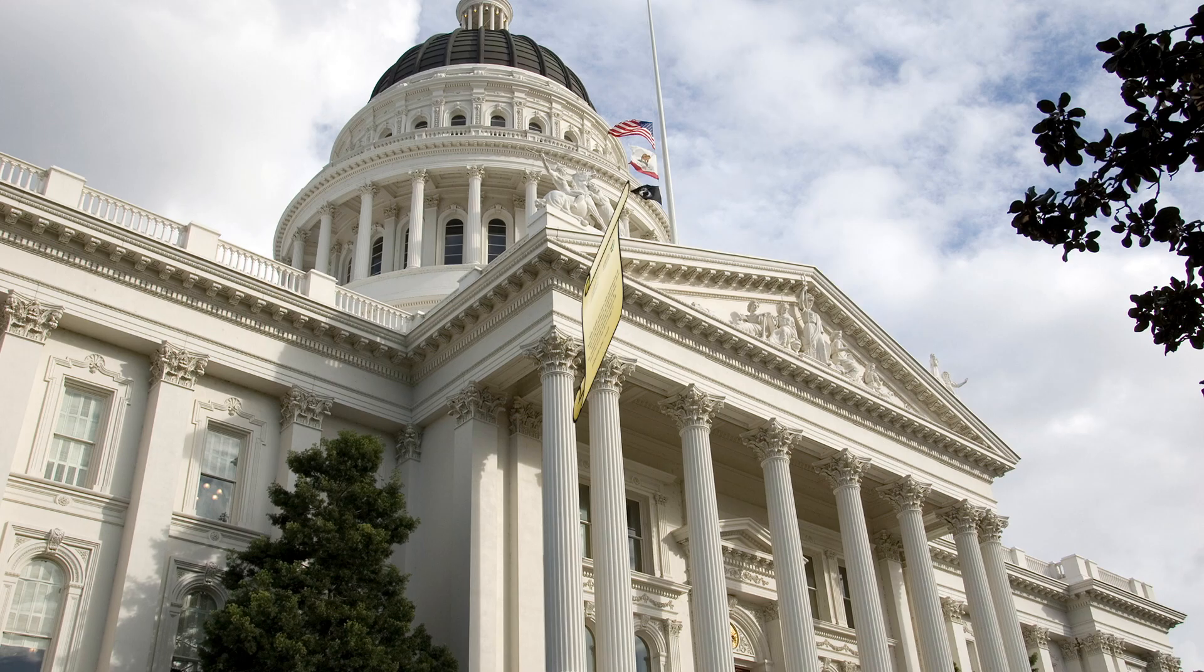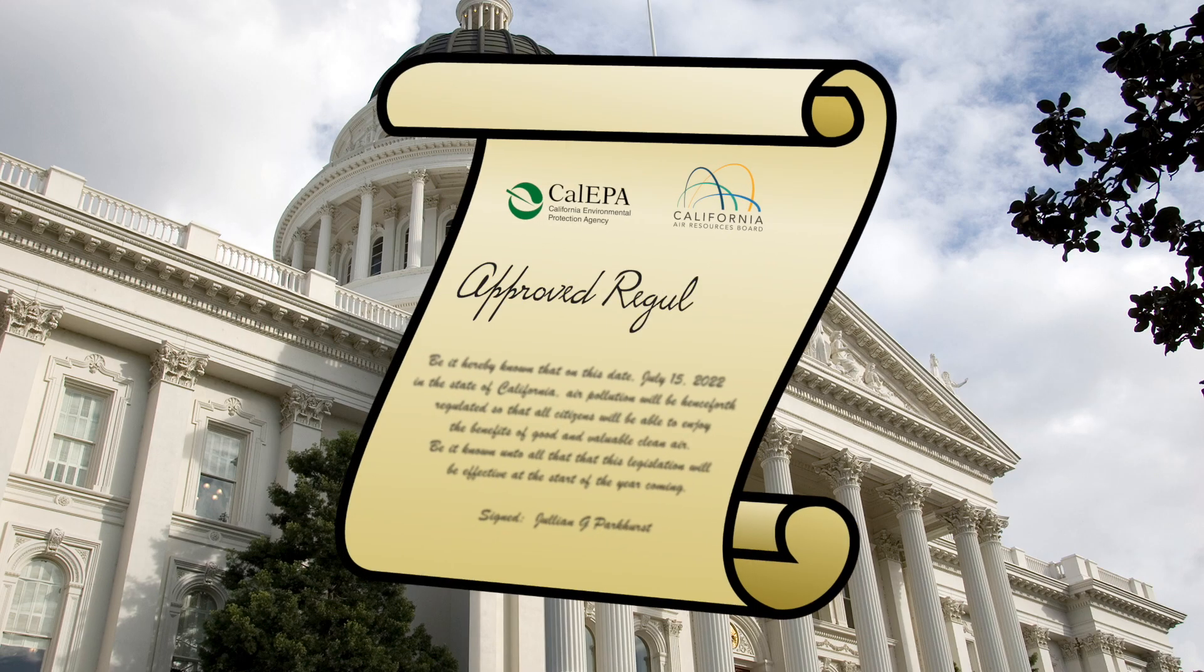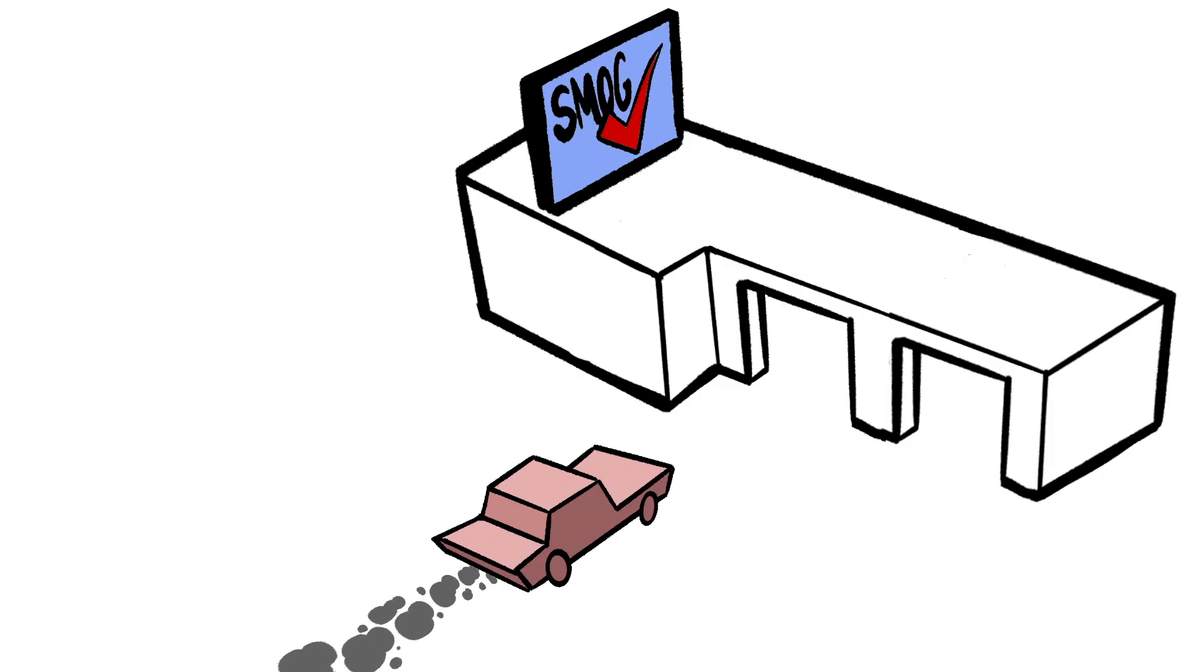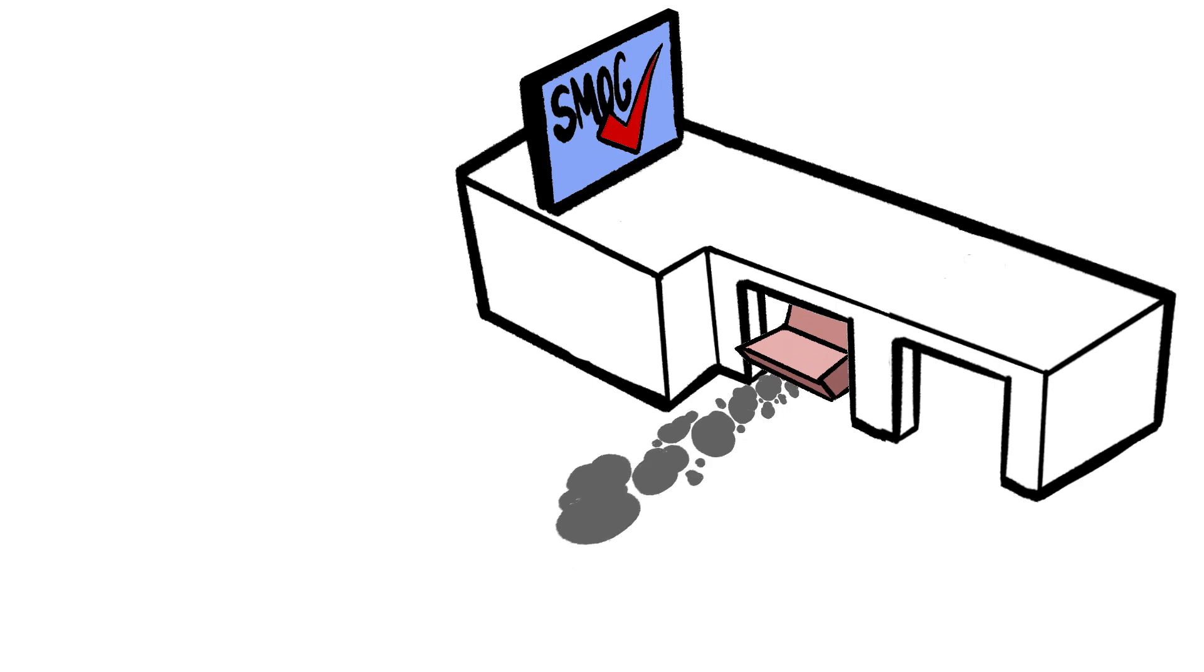After regulations are approved, CARB may use executive orders to ensure that new vehicles and engines sold in California comply with requirements. In California, existing vehicles are also required to perform smog checks to ensure the vehicle continues to meet emission standards after years of operations.